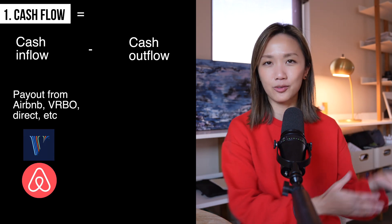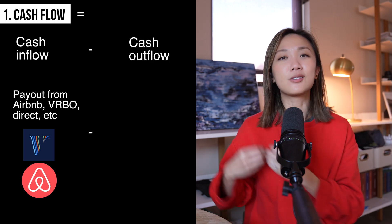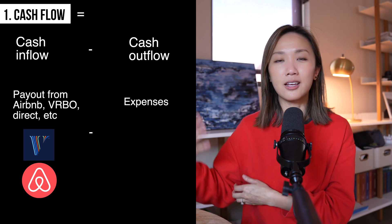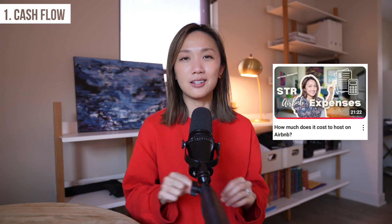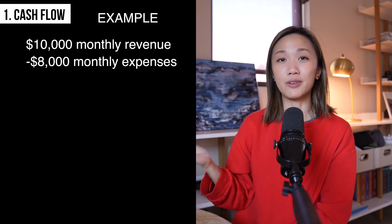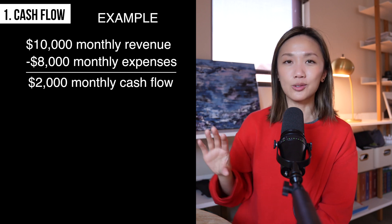For most short-term rentals, this is your payout from Airbnb, VRBO, wherever, minus your expenses like the mortgage, the cleaning fees, and any other maintenance expenses. I just did a video on all the expenses that go into running a short-term rental, so I'll leave that in the description box below. Cash flow is useful because A, this is how you feel at the end of the month — did you actually make positive money in your bank account? And B, it also represents the income you're receiving and able to use each month if you're hoping to use real estate income to quit your job or scale back. For example, if your Airbnb brings in revenue of $10,000 per month minus $8,000 of expenses, then each month you're getting $2,000 of cash flow.